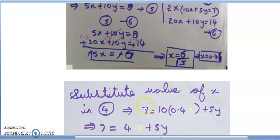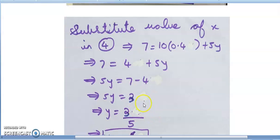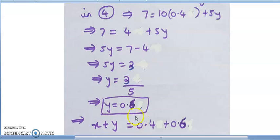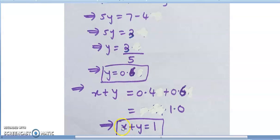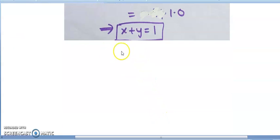Substituting x = 0.4 into the fourth equation: 7 = 10(0.4) + 5y = 4 + 5y. So 5y = 3, and y = 3/5 = 0.6. Therefore x + y = 0.4 + 0.6 = 1.